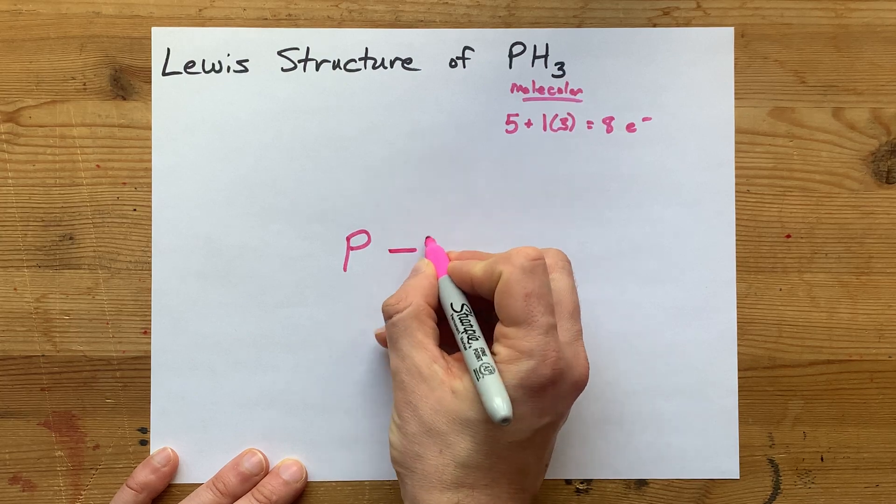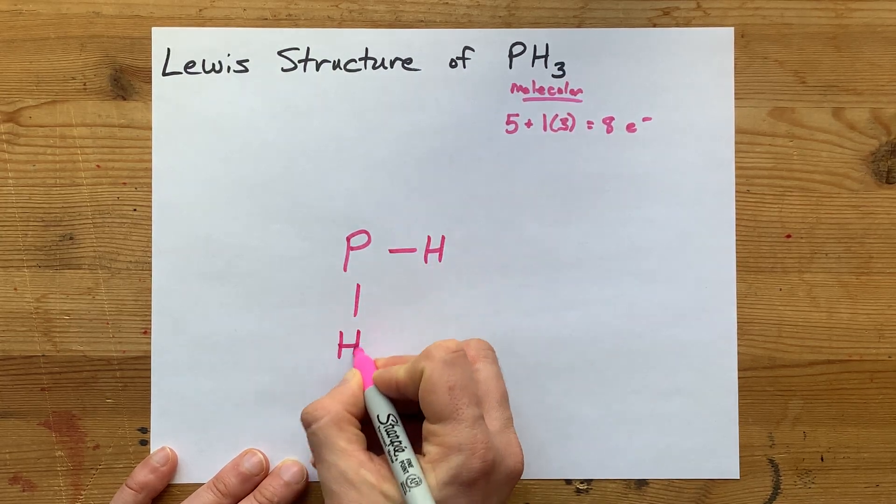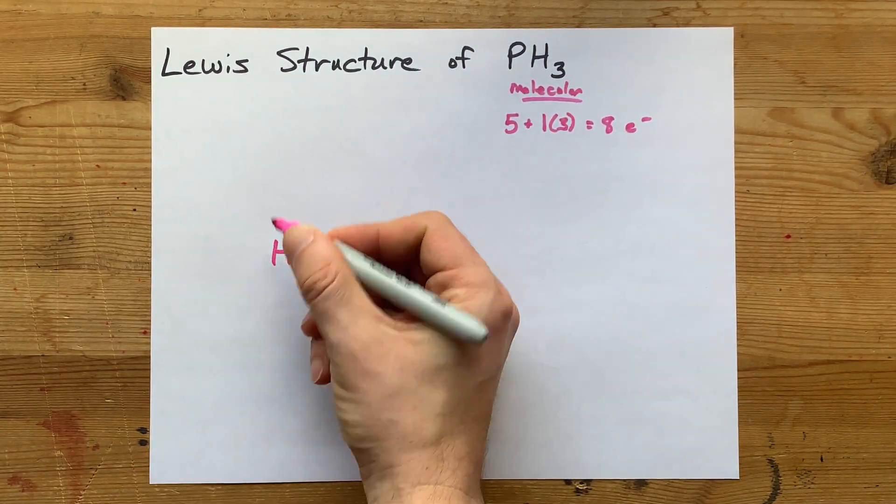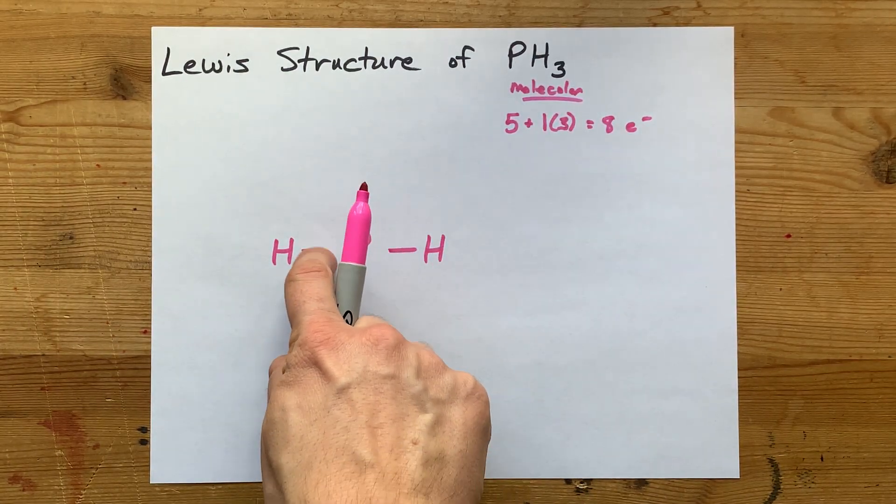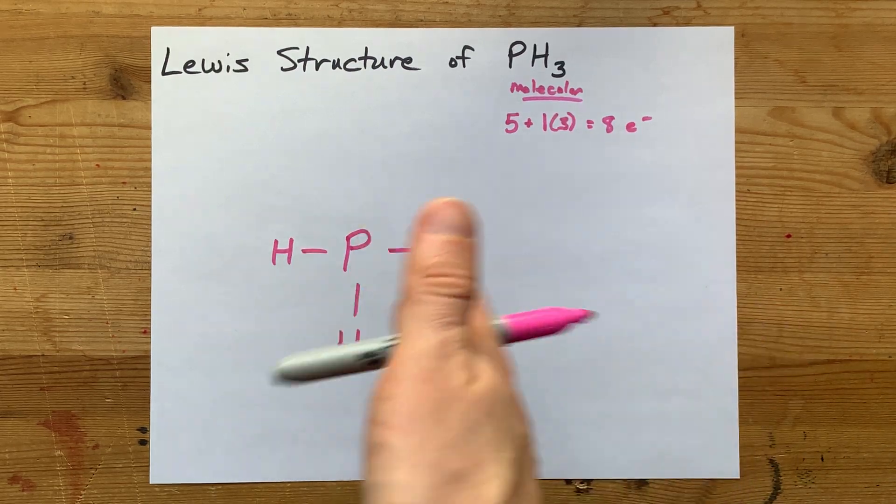Anyways, there's your phosphorus single bonded to 1, 2, 3 H's. That step is over. Please note, I've already used 2, 4, 6 electrons to make that happen.